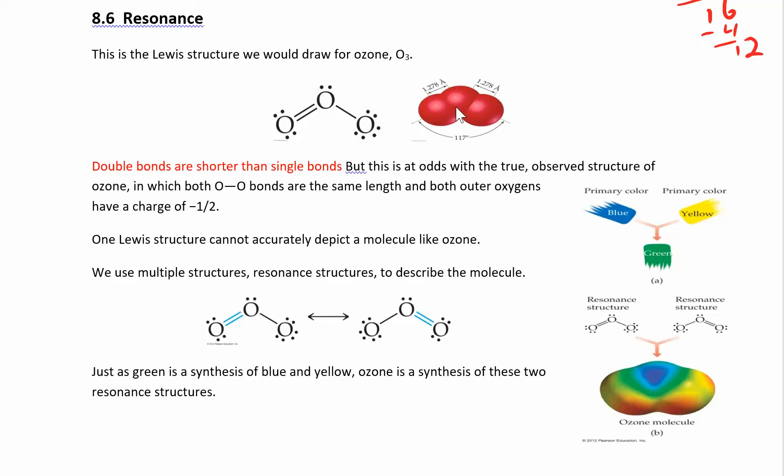The bond distances are the same in the real molecule. They're both a little bit shorter than a single bond. It's worth noting at this point that double bonds are shorter than single bonds and triple bonds are shorter than both of those.